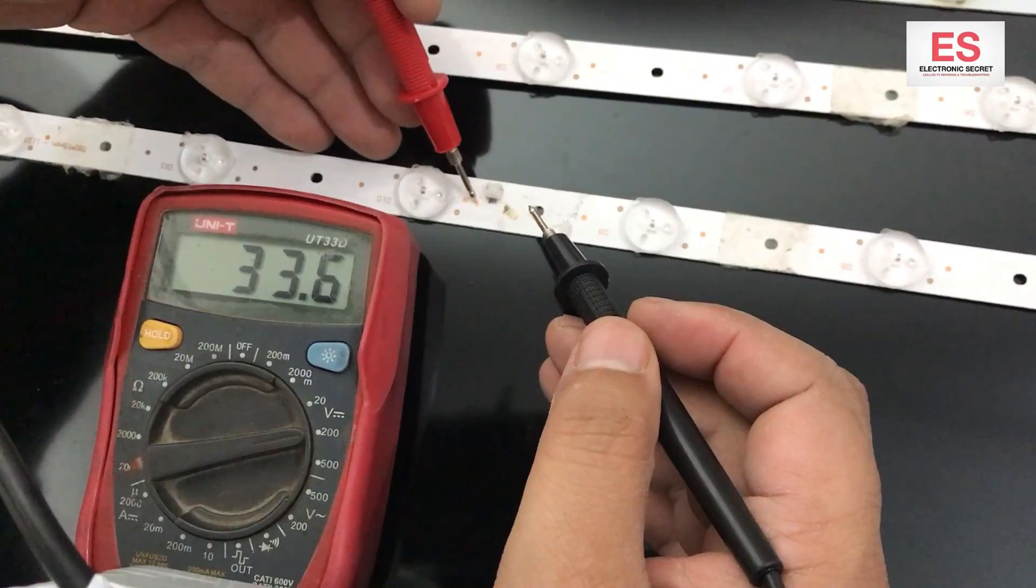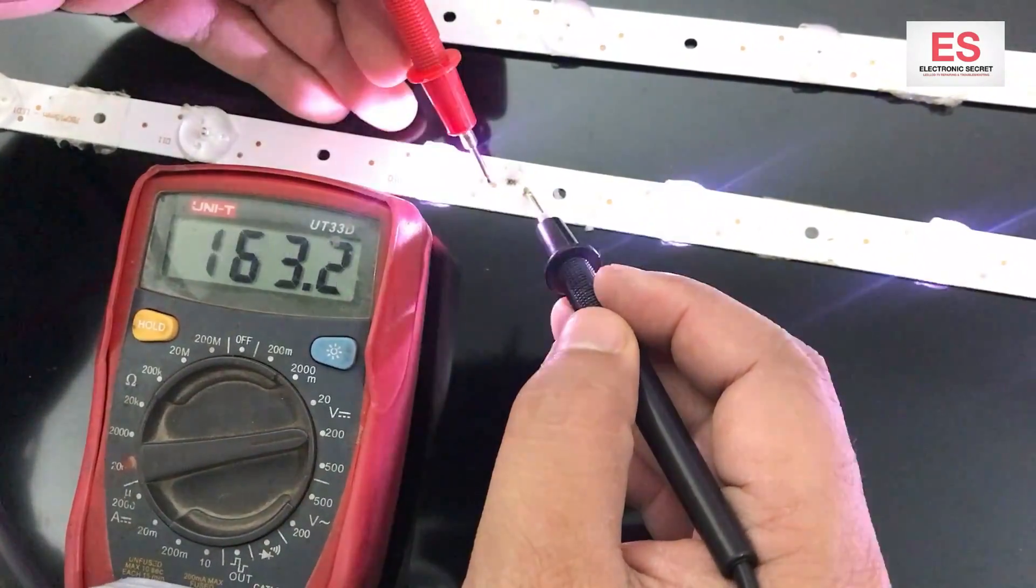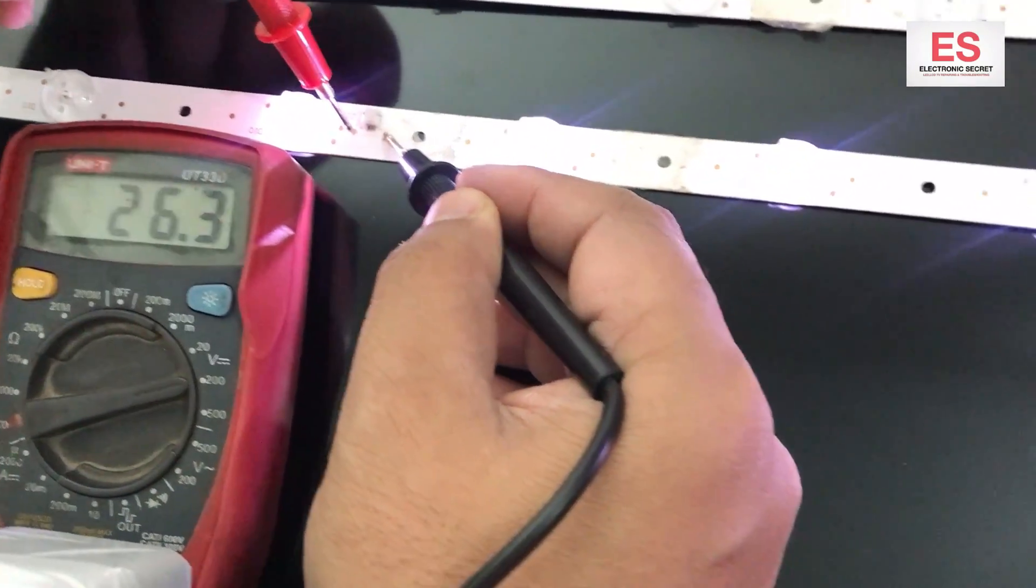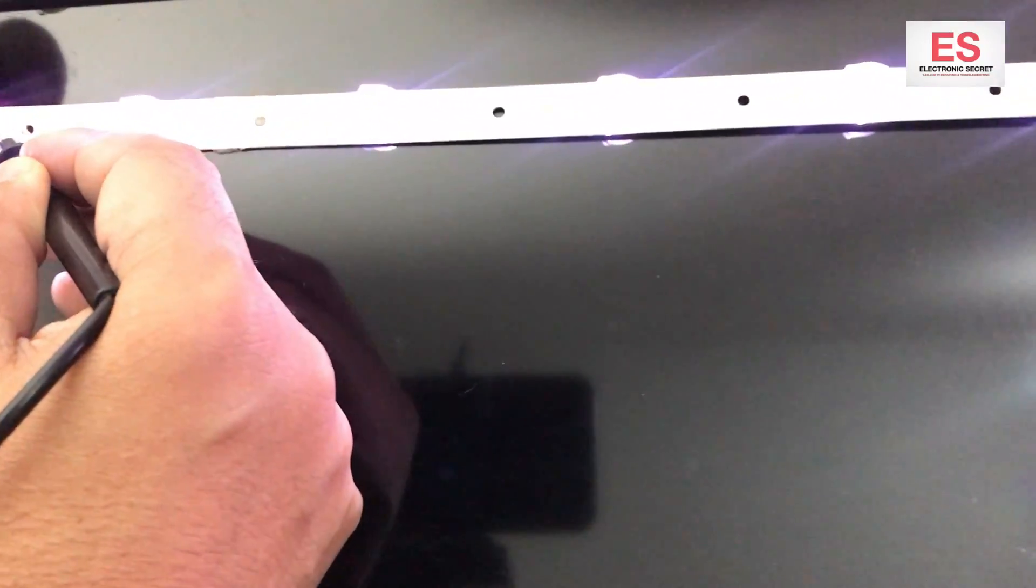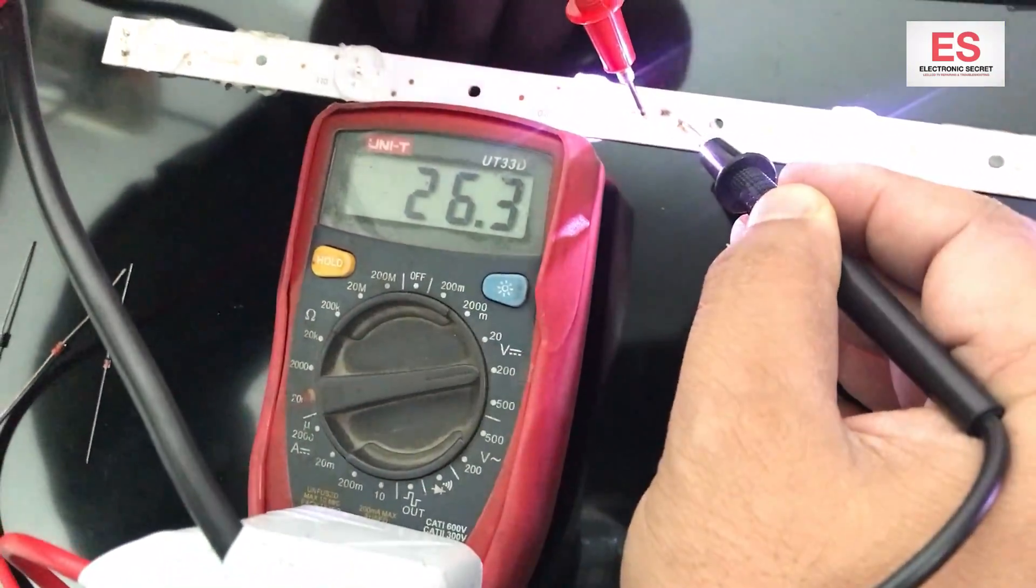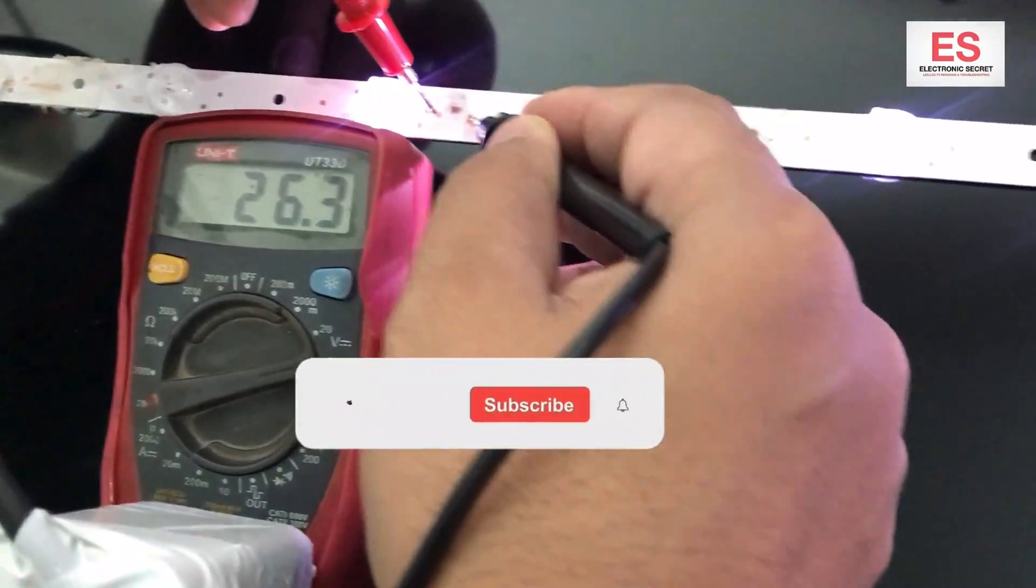Now I am checking the backlight strip of a TV. You can see that two lights are not glowing and all others are glowing and it is also showing the voltage on the meter. So this backlight is faulty because its two lights are not glowing.